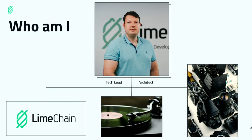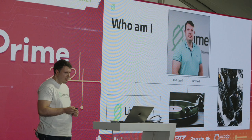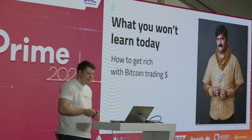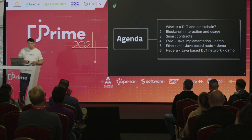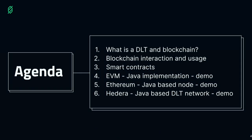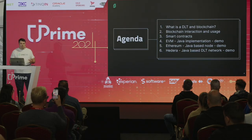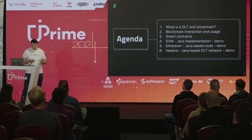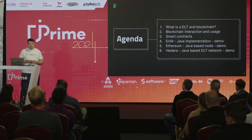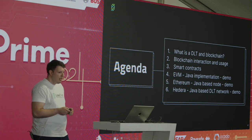The topic for today is making some examples of how Java can be utilized in the blockchain domain. Before that, there is something we won't be able to cover today — we would focus only on technology. Our agenda: we'll cover what is DLT (distributed ledger technology), what's blockchain, how we can interact with it, why we need it, and what are smart contracts. Then we'll have three demos about the EVM module, running an Ethereum node built on Java locally, and interacting with a whole network developed on Java called Hedera.